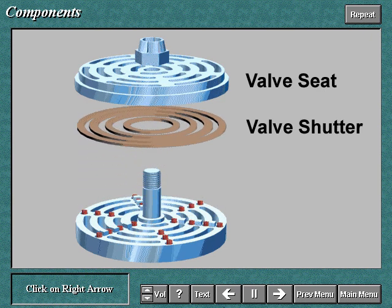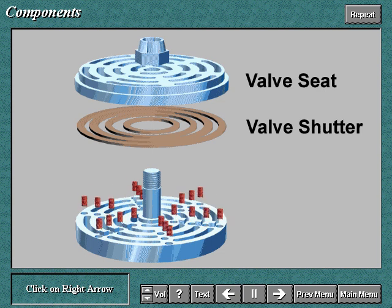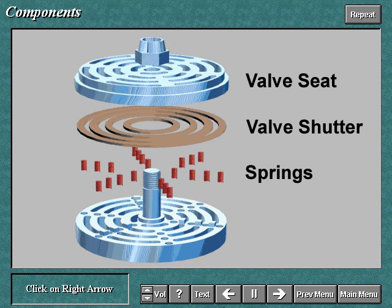The valve shutter is the component that alternately opens and shuts the flow ports. The springs are the components that return the valve shutter onto the seat when the flow of gas has stopped. The valve stop or guard is the part against which the valve shutter stops. It determines the degree of lift that the shutter may have.